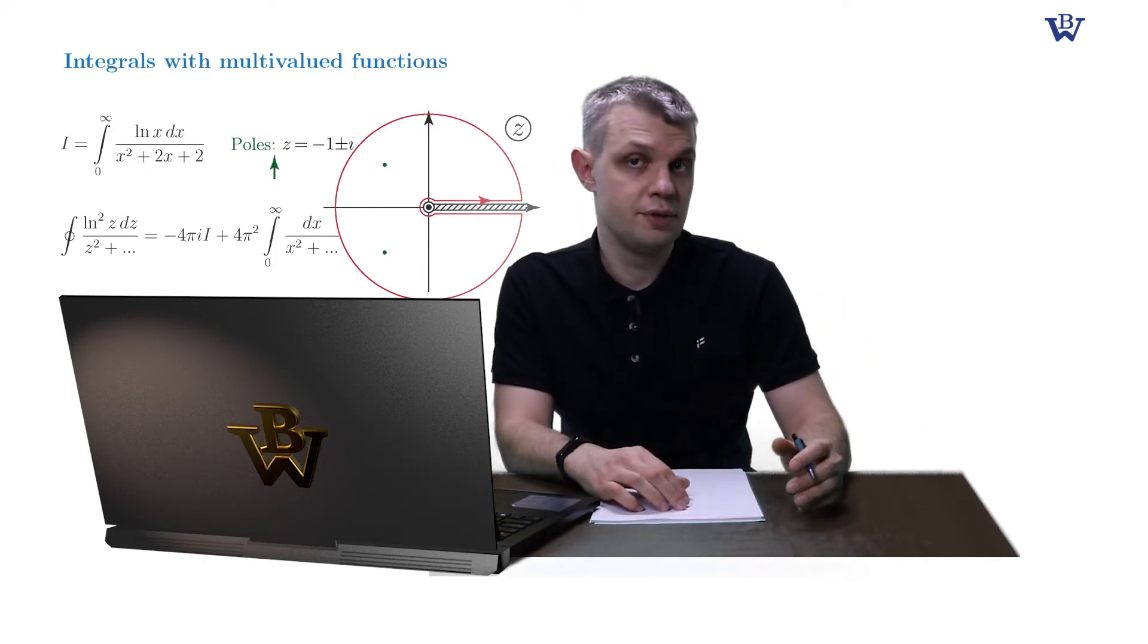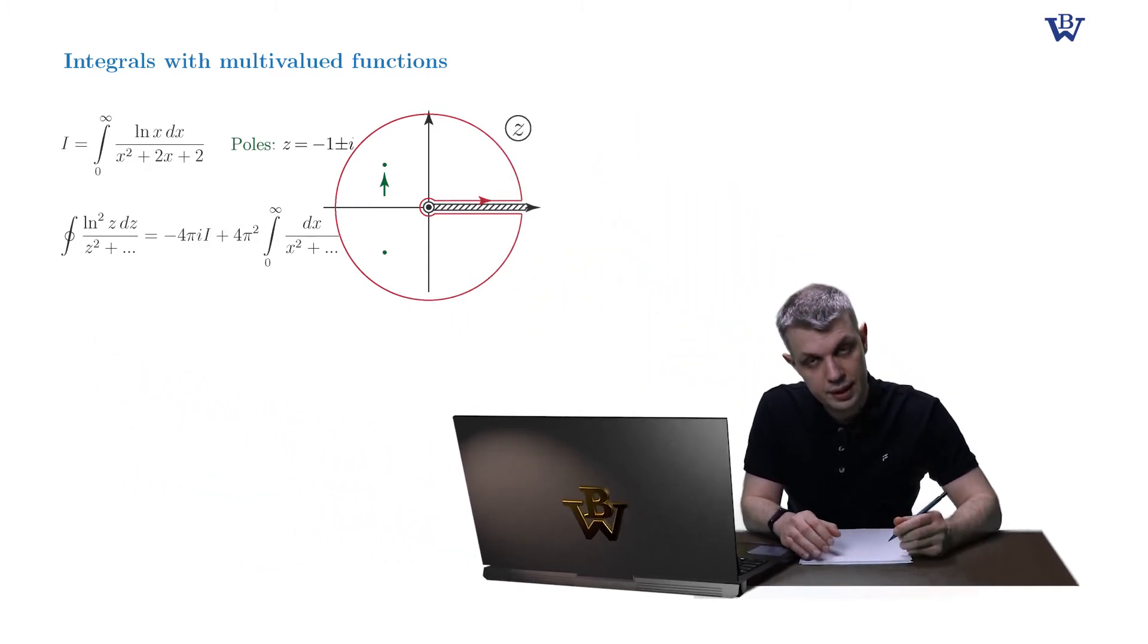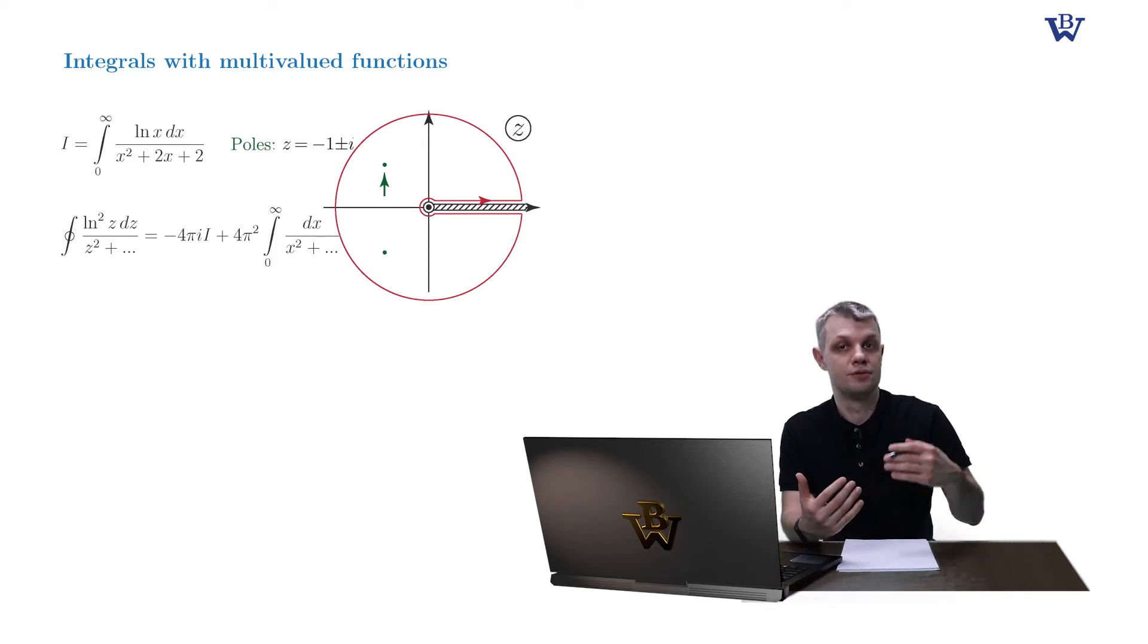So let us compute the residue at point minus 1 plus i. It's a simple, meaning first-order pole, and we use a short expression for this particular kind of poles.